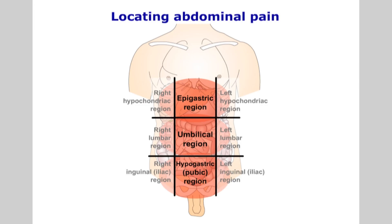If the patient is unable to localize the symptoms, at least try to establish whether these are epigastric, peri-umbilical or hypogastric. In very acute conditions, especially if there is a degree of peritonitis present, it will make it even more difficult to be accurate about the nature of the problem. Try to resist offering the acute patient pain-relieving medications such as opiates before you have established a diagnosis. Meanwhile, consider a nil-by-mouth policy.